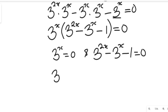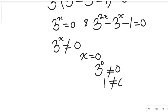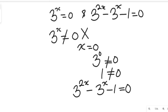Now, 3 to the power of x equal to 0 is not true, because 3 to the power of x cannot be equal to 0 for any value of x. To confirm: 3 to the power of 0 is 1, and 1 cannot equal 0. So for all values of x, even negative values, 3 to the power of x can never be equal to 0. We therefore neglect that solution and focus on the quadratic equation: 3 to the power of 2x minus 3 to the power of x minus 1 equals 0.